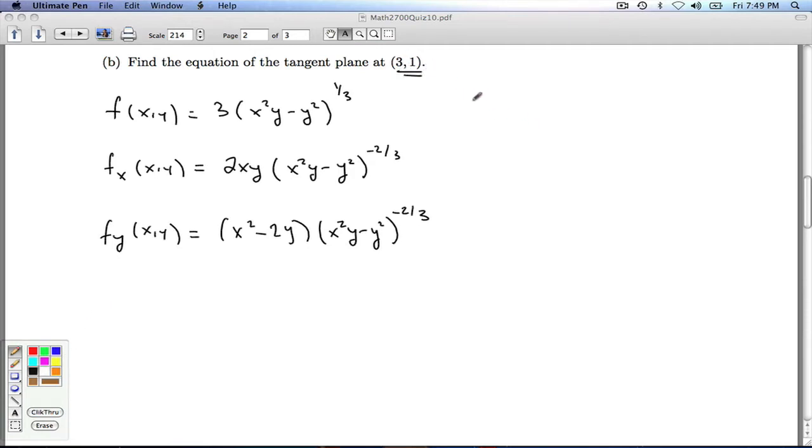That's the point that we care about. So what's f of 3, 1? I plug in 3 for x, 1 for y. I'm going to get 3 squared times 1, which is 9, minus 1 squared. So this works out to be 8. 8 to the 1 third is 2. 3 times 2 is 6. So that's that. And remember, that's our z naught.